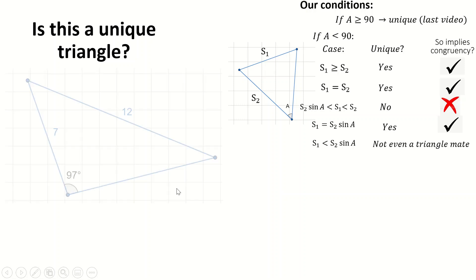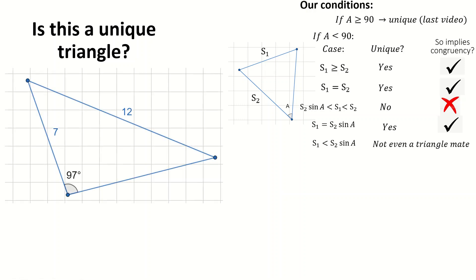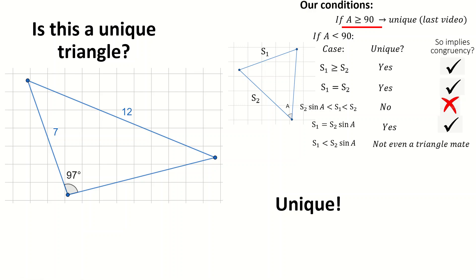Last round: is this a unique triangle? This one's pretty easy because the angle is just bigger than 90. So yes, it's unique. Really well done if you got that. I think I can stop talking about triangle congruency now, or at least I very much hope so.